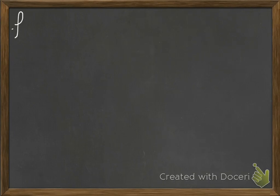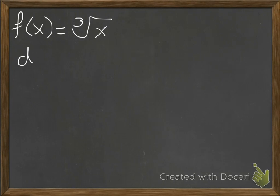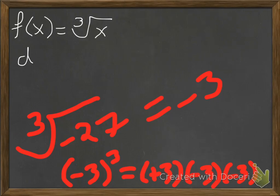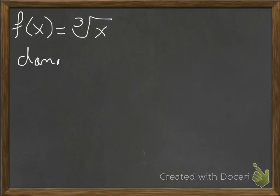Now let's look at cube roots. The cube root function has a little 3 on the radical symbol. Cube roots don't have any problems with negatives, positives, or 0 — for example, the cube root of negative 27 is negative 3, because negative 3 times negative 3 times negative 3 equals negative 8. Wait — it equals negative 27. Two negatives cancel, leaving one negative. So the cube root function's domain is all real numbers, negative infinity to infinity.